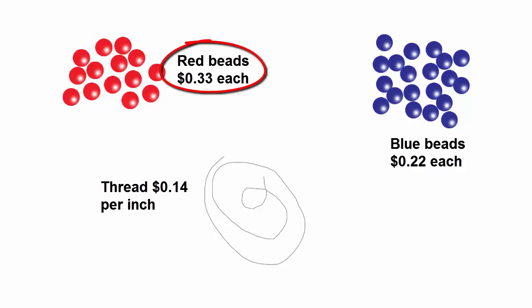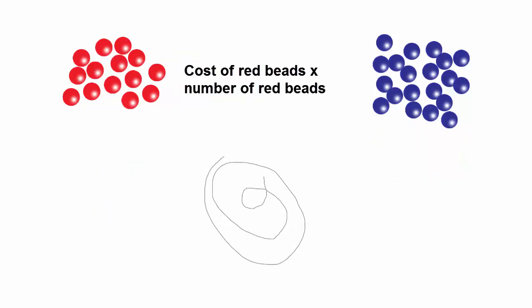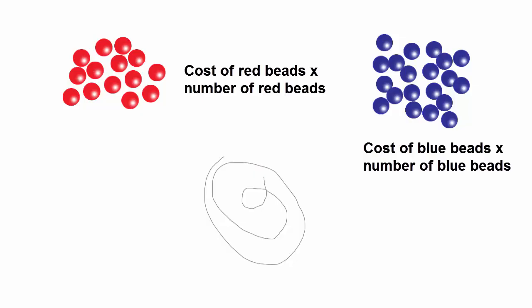What is the cost of the red beads? What is the cost of the blue beads? And what is the cost of the thread? The operation to find each answer is the same: cost of red beads times number of red beads; cost of blue beads times number of blue beads; cost of thread times length of thread. Each subproblem calculates the cost of the material by determining how much of each material was used. This pattern of similar subproblems aids us in determining how to find the answer to the larger problem.